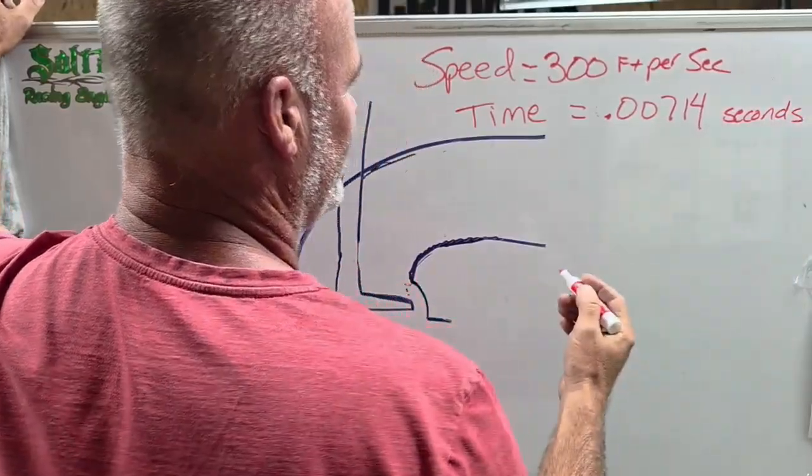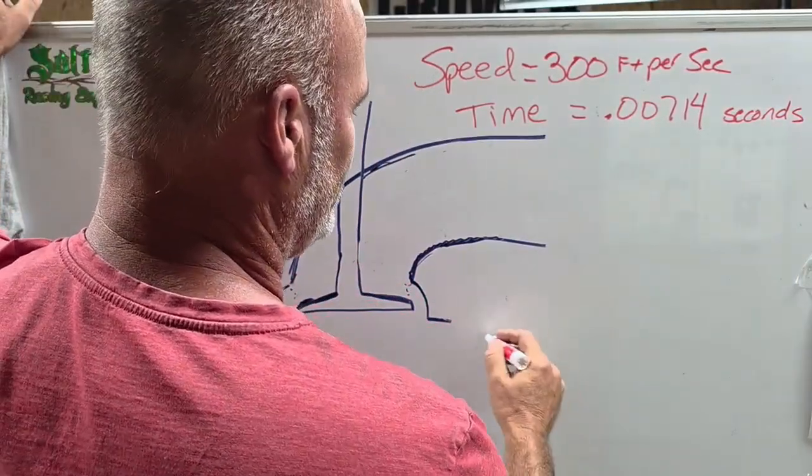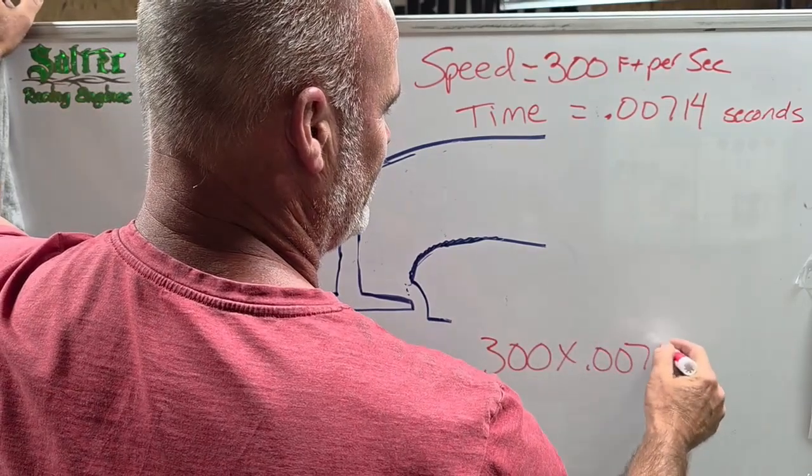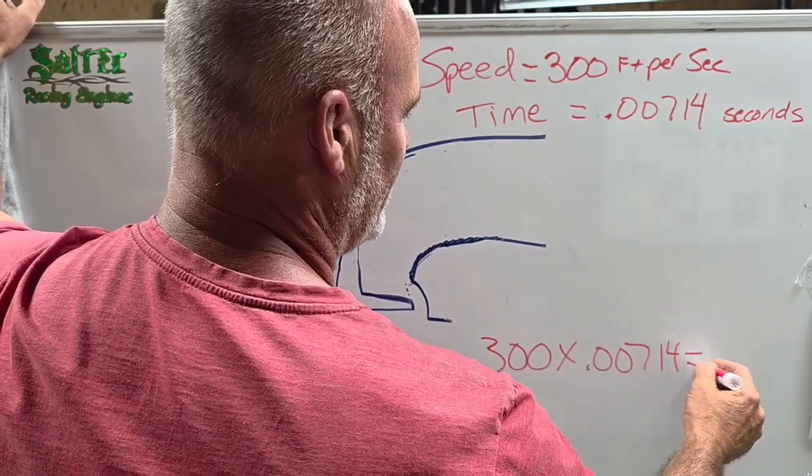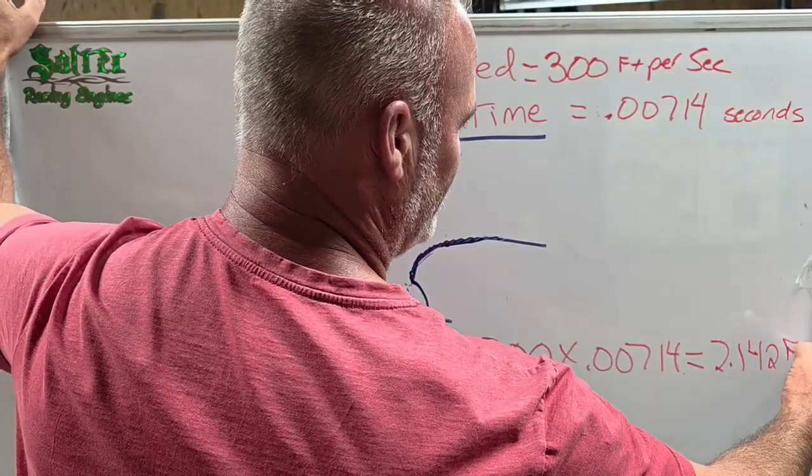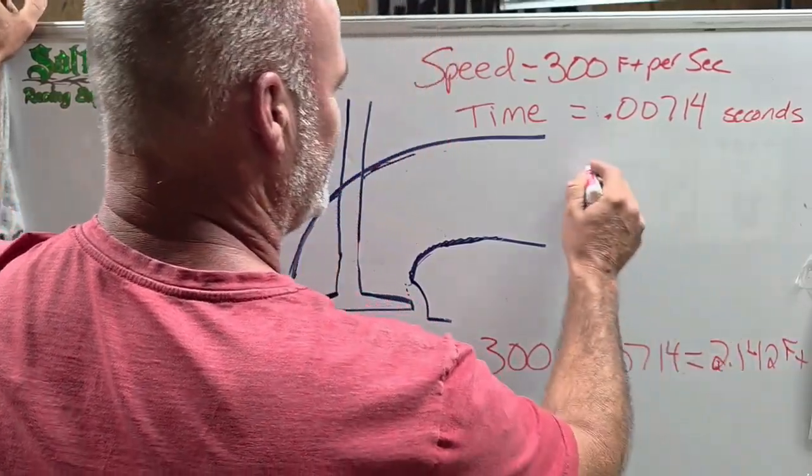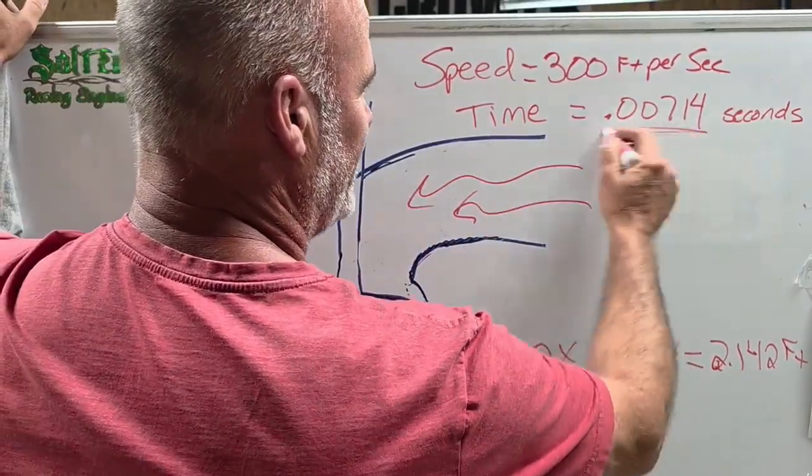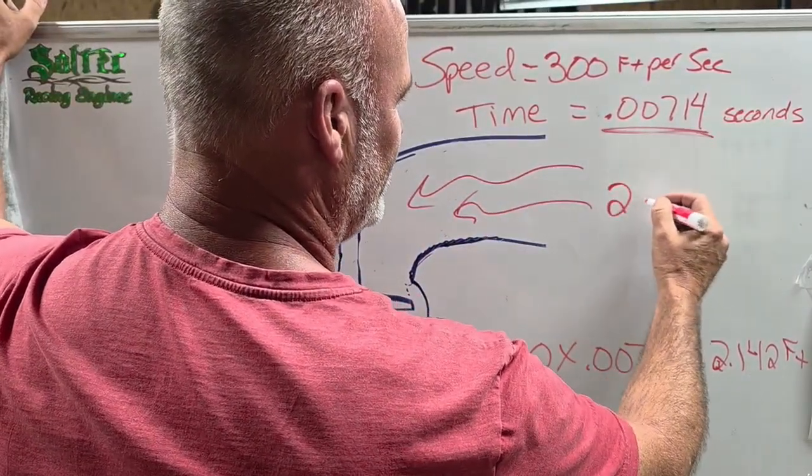You know what you do now? You simply multiply the two. 300 times 0.00714 equals 2.142 feet. That means that that airflow, in that amount of time, travels two feet.